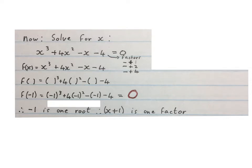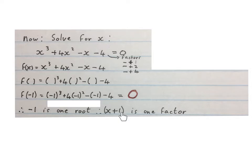So x equals minus 1 is one of the roots — meaning I put minus 1 everywhere in place of x and it gave me zero. Now we say that x plus 1 is one of the factors. You write the bracket, write the x, change the sign, write the one, close the bracket. That is your first factor.